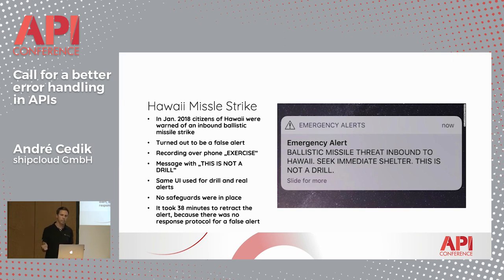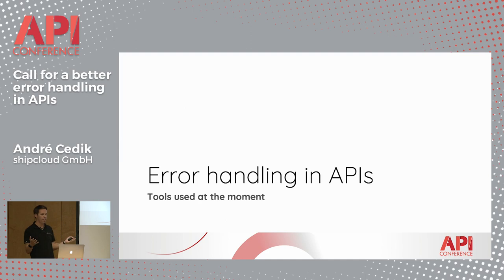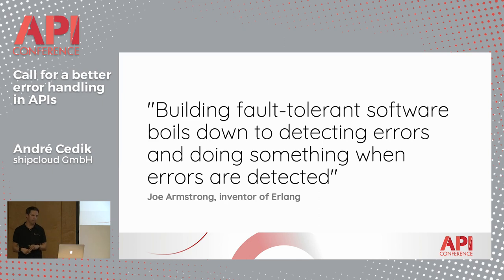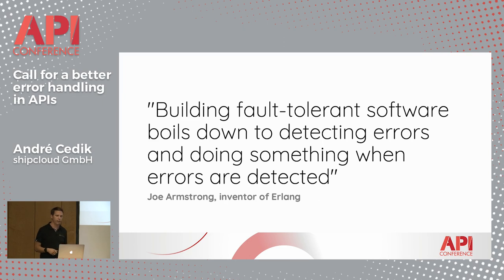So as you can see, not communicating in a clear way can lead to a lot of bad things happening. Let's head back to APIs, since this is what we're here for. The late Joe Armstrong made this quote in his GoTo Conference talk in 2018: "Building fault-tolerant software boils down to detecting errors and doing something when errors are detected." Which is very fitting, I think.